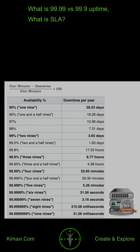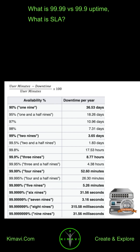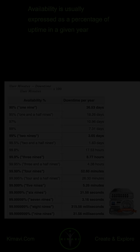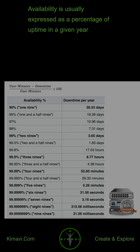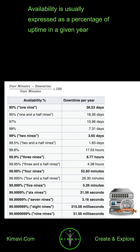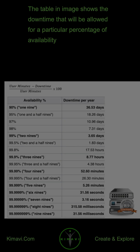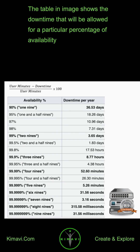What is 99.99 versus 99.9 uptime? What is SLA? Availability is usually expressed as a percentage of uptime in a given year. The table in the image shows the downtime that will be allowed for a particular percentage of availability.